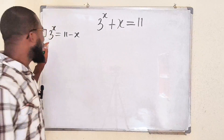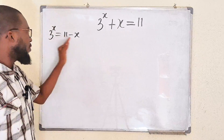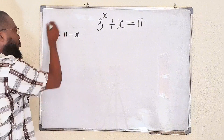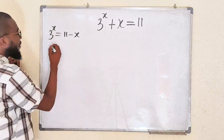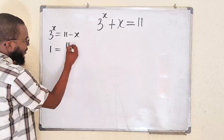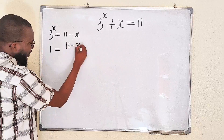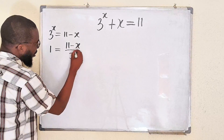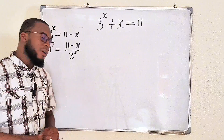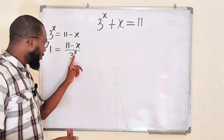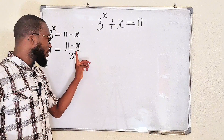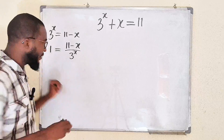And next, I would like to divide both sides by 3 to the power of x. 3 to the power of x divided by 3 to the power of x is 1, and this is equal to 11 minus x divided by 3 to the power of x. According to one of the laws of indices, we can take this 3 to the power of x to the top, but the exponent will become negative.